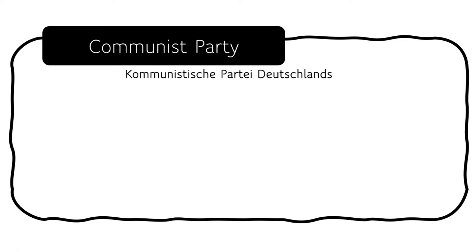The KPD was formed in January 1919, a uniting union of a variety of different left-wing groups, including most famously the Spartacists. They would even take part in the failed Spartacist uprising, which we discussed in an earlier video on the collapse of the Weimar Republic. Initially, the Communist Party had desired an immediate revolution much like the Bolsheviks, but as time went on, they became slightly more moderate and chose instead to take part in the Reichstag. From 1924 onwards, they found a reasonable amount of success in democratic processes.